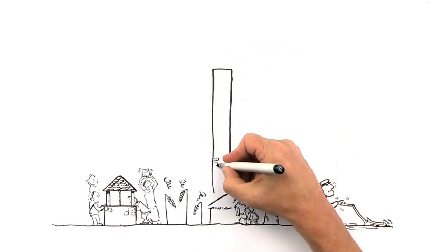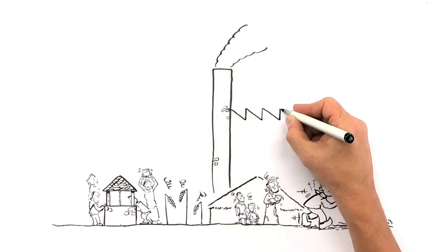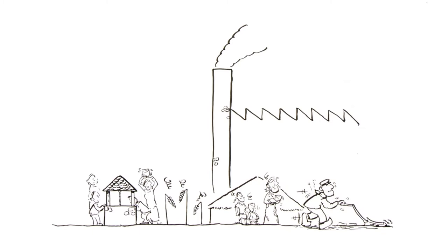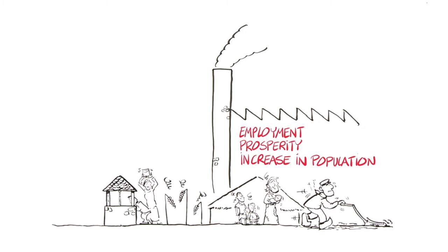During the late 19th century, factories arose in cities and villages. This led to employment, prosperity and a big increase in population. People moved from the country to the rapidly expanding cities.